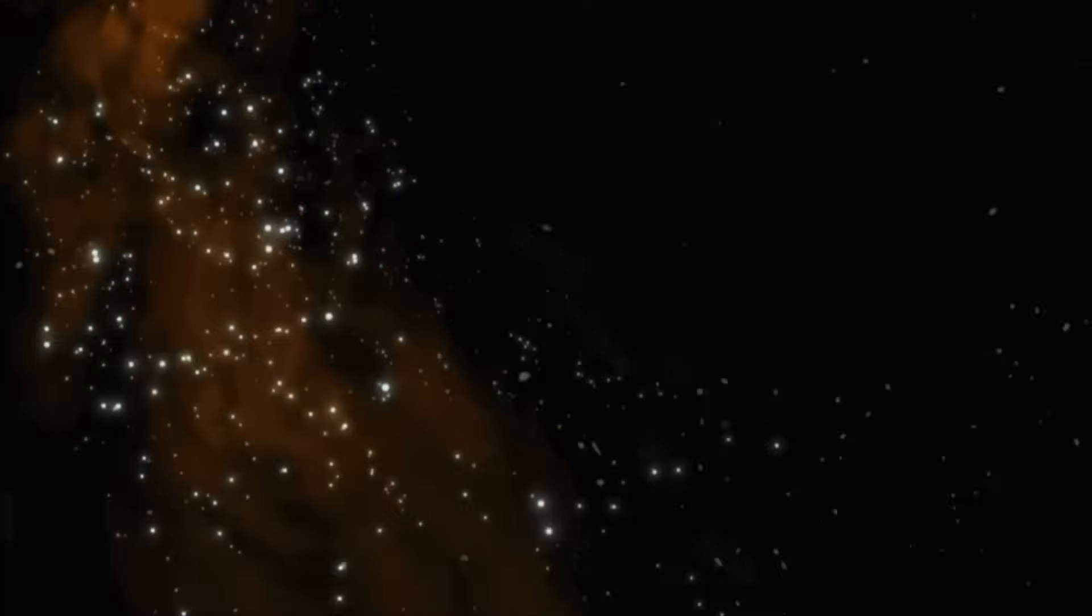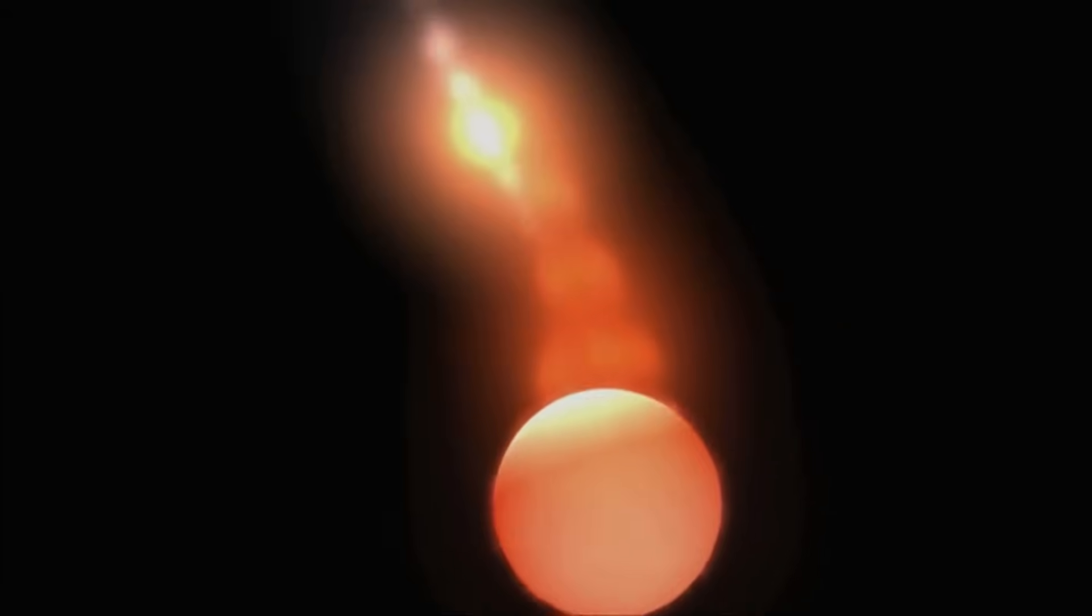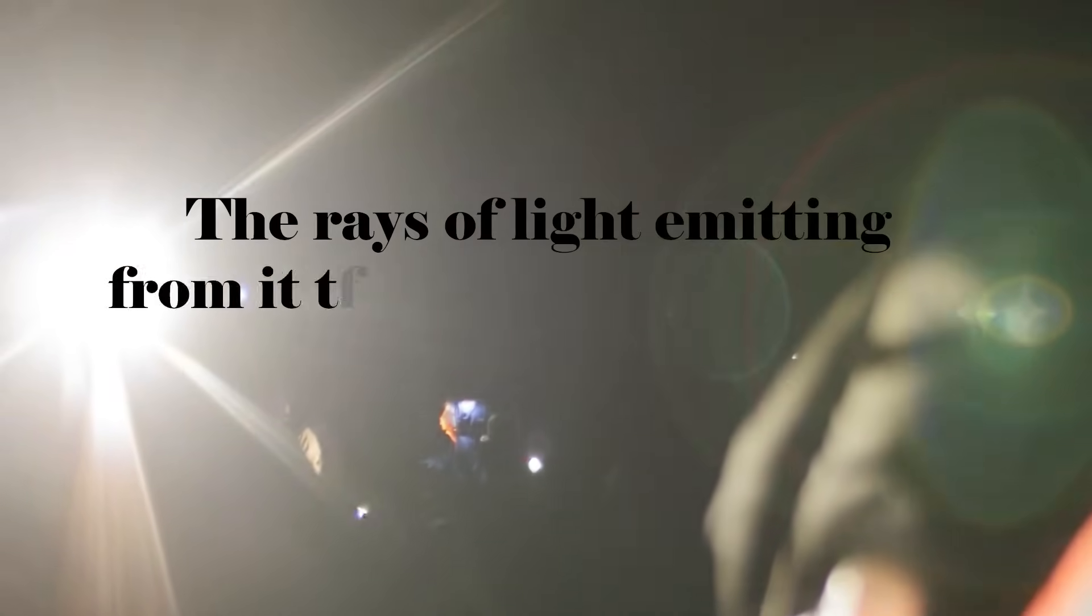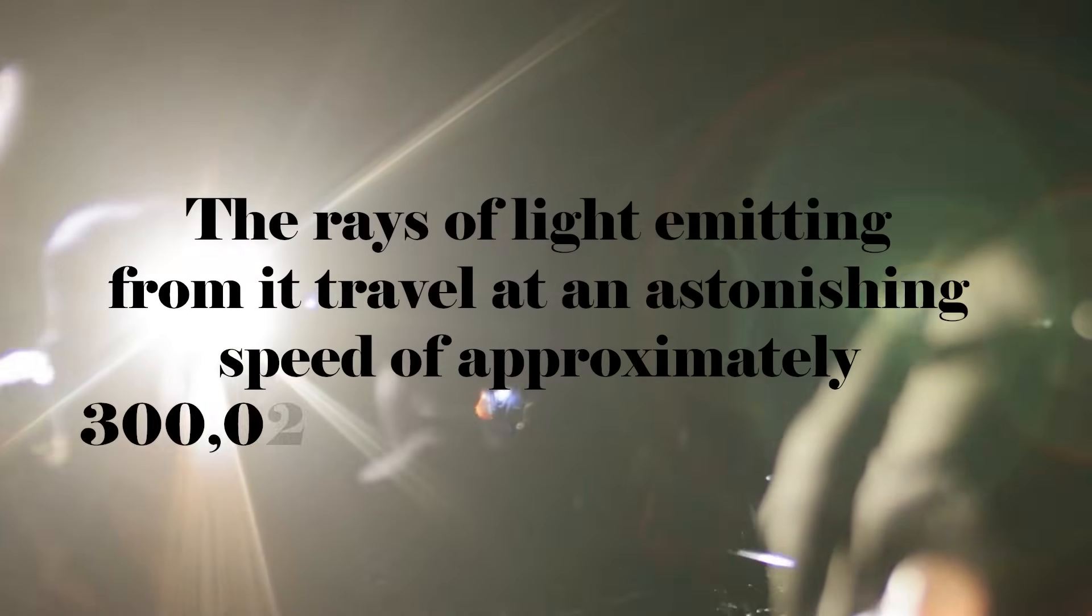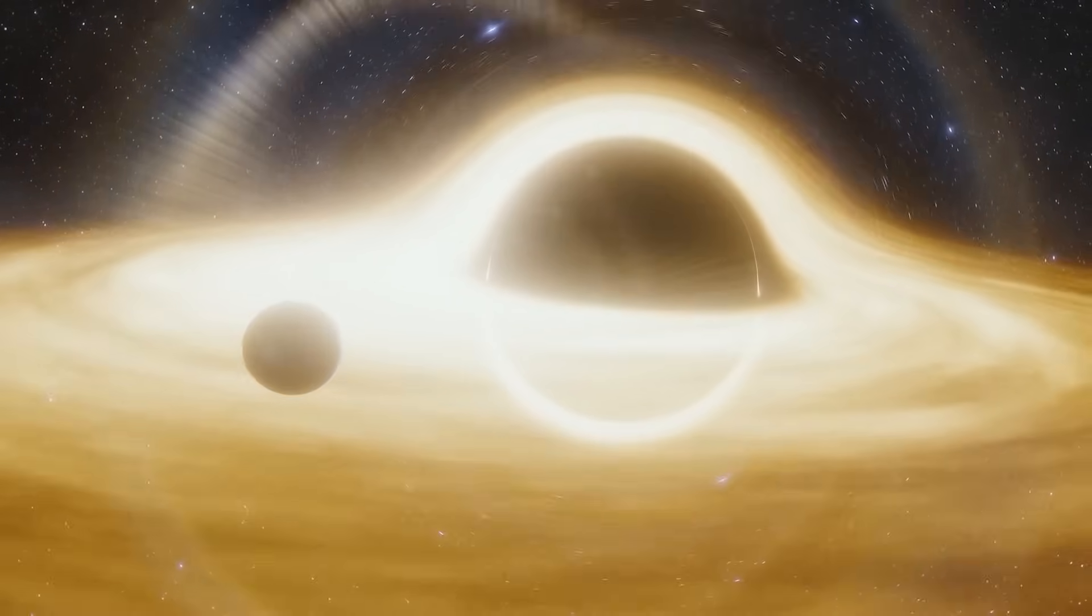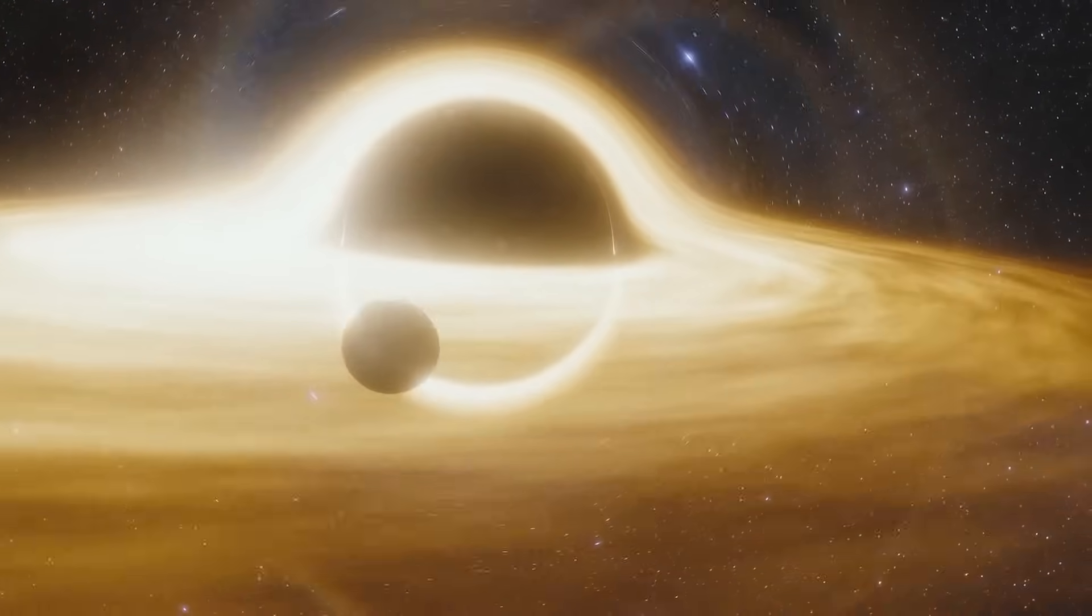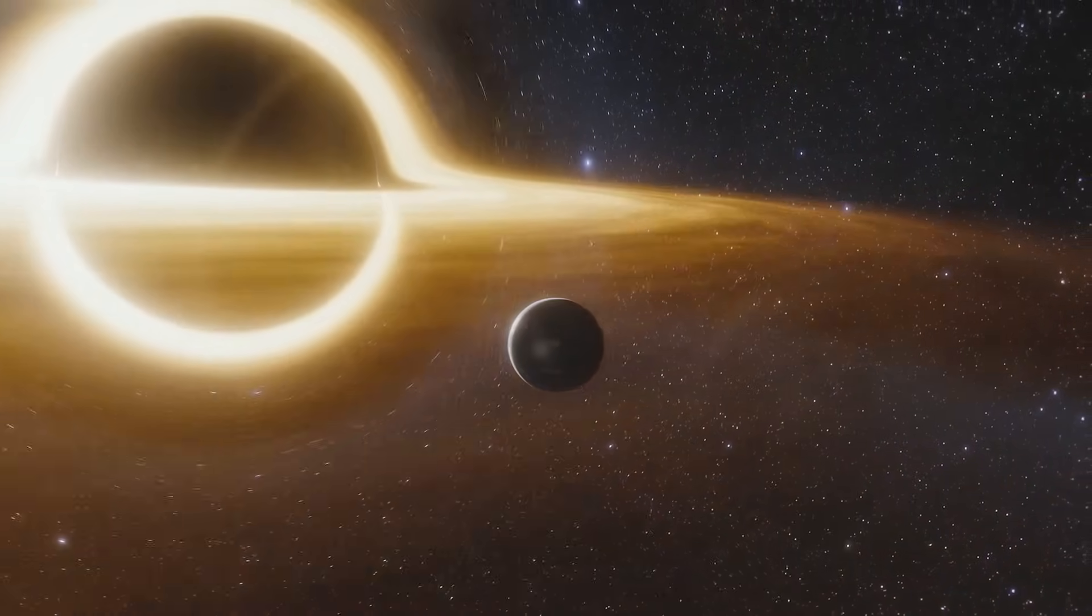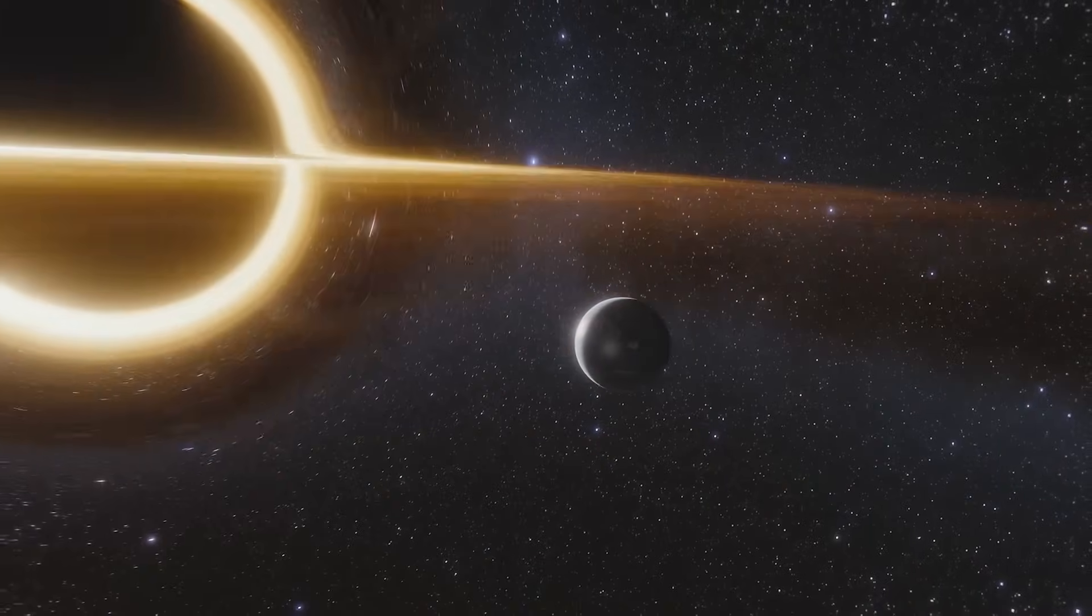The event horizon forms an invisible force field that holds everything within it, including light, which is normally considered the fastest entity in the universe. To highlight the extraordinariness of the situation, imagine that you are turning on a flashlight. The rays of light emitting from it travel at an astonishing speed of approximately 300,000 kilometers per second. However, if you were to somehow find yourself inside a black hole, the speed required to escape its pull would have to be even faster than the speed of light. This is completely impossible according to our current understanding of physics.